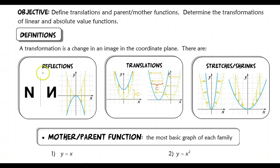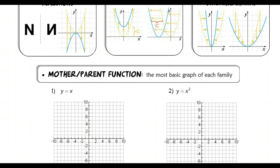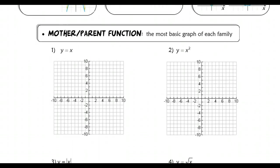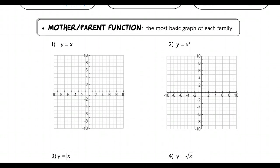Here are basically your three different types of transformations — reflection, translation, stretch and shrink — written in picture form so you can have that for reference. What I'm going to do now is go through each mother function, sometimes called the parent function. It's the most basic graph of each type of family that you're going to see.